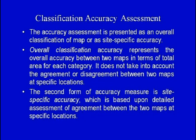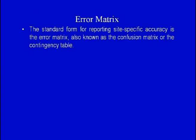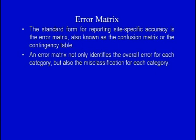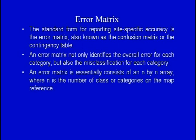Accuracy assessment is presented as either overall classification accuracy or site-specific accuracy. Overall accuracy represents the overall agreement between the two maps in terms of total area for each category but does not account for agreement at specific locations. Site-specific accuracy is based upon detailed assessment of agreement between the two maps at specific locations. The standard form of reporting site-specific accuracy is the error matrix, also known as the confusion matrix or contingency table.